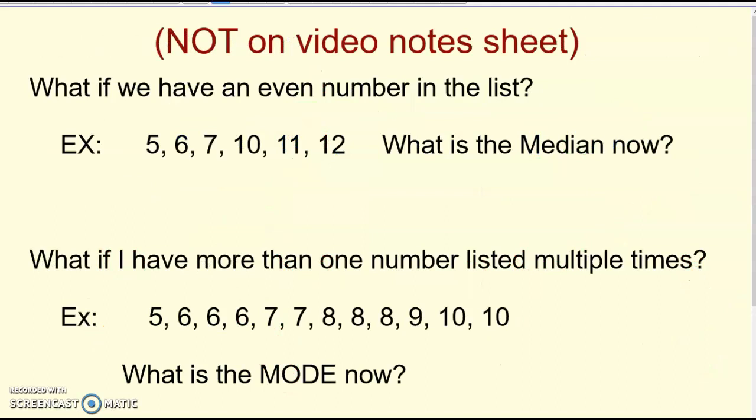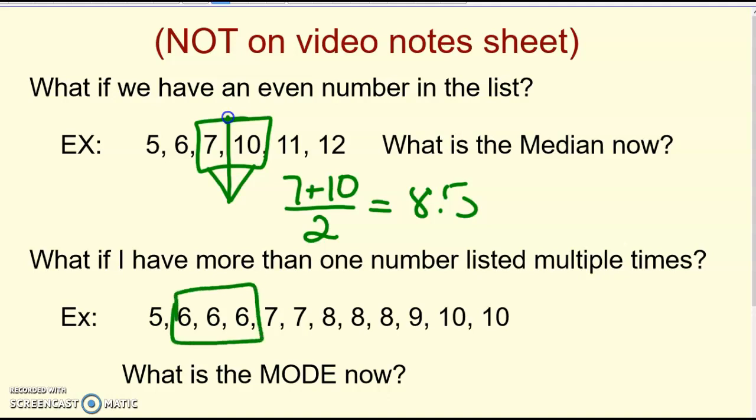This isn't on your sheet, you don't have to write it down, but I just wanted to go over real quickly: if you have an even set of numbers in the list, if I'm going to find the middle now, I see that the middle for getting the median is in between these two numbers. In order to get the median now, I'm going to have to take the average between 7 and 10. So I would do 7 plus 10 divided by 2 to get that average, and I get 8.5. So if you're finding the middle between two numbers, take the average of those two. What if I have more than one number that's listed multiple times, kind of like we did in our last example? You look for the one that's listed the most. It looks like here I have 6s and 8s, so those would both be my mode. You can have more than one mode if they're repeated equal amounts of time.